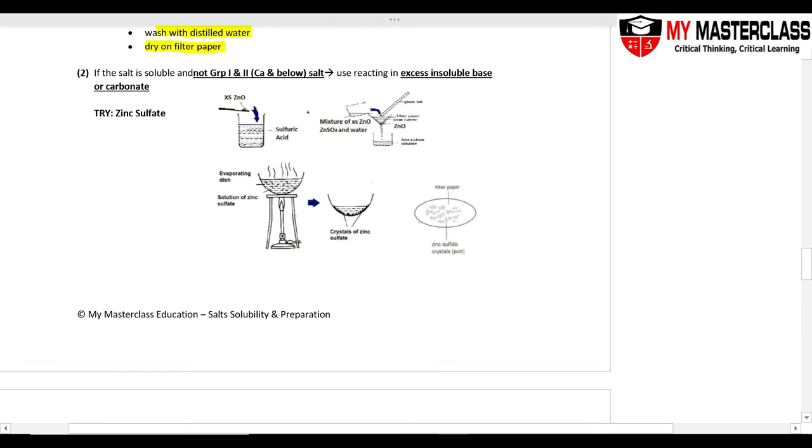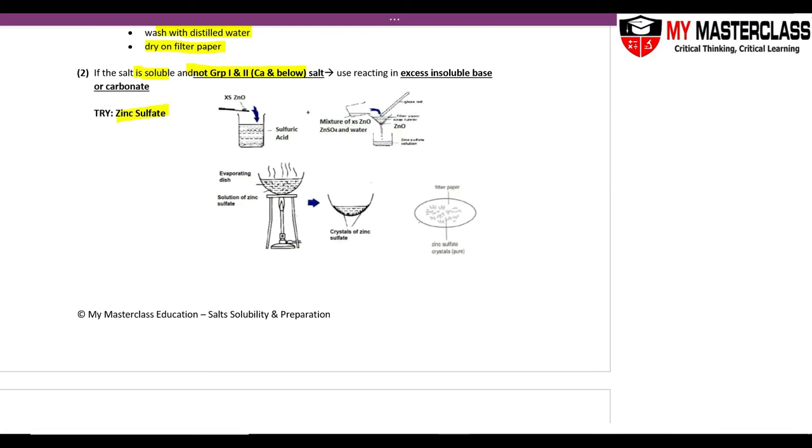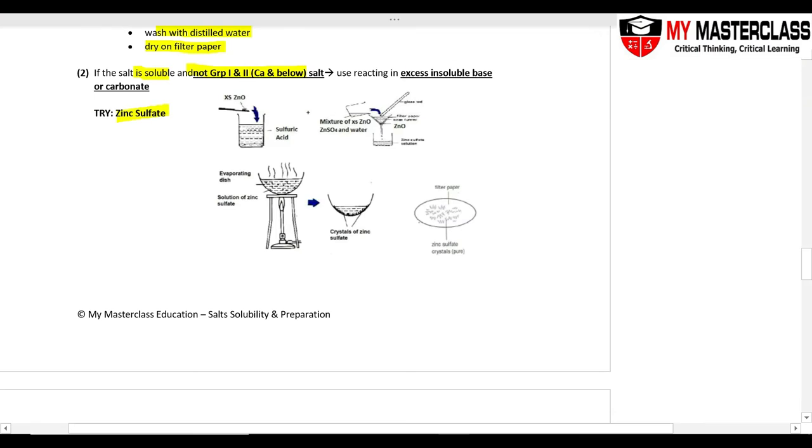If the salt is soluble but not Group 1 and 2, not calcium and below, for example magnesium sulfate or zinc sulfate, in this case your transition method is in excess. The excess insoluble base or carbonate - pick the oxide, hydroxide, or the carbonate.